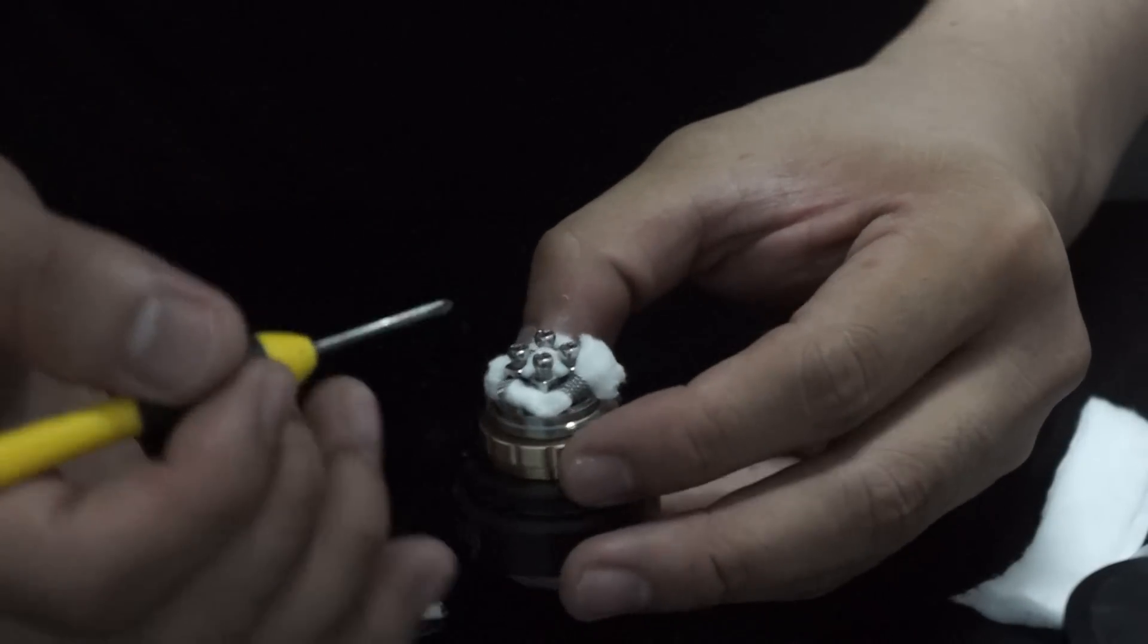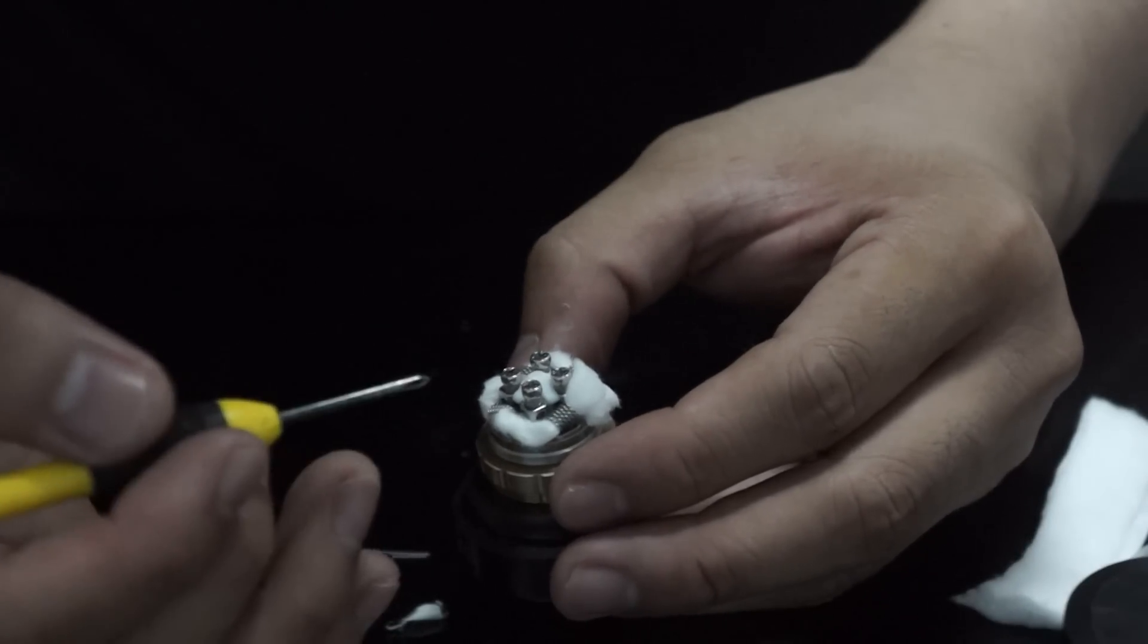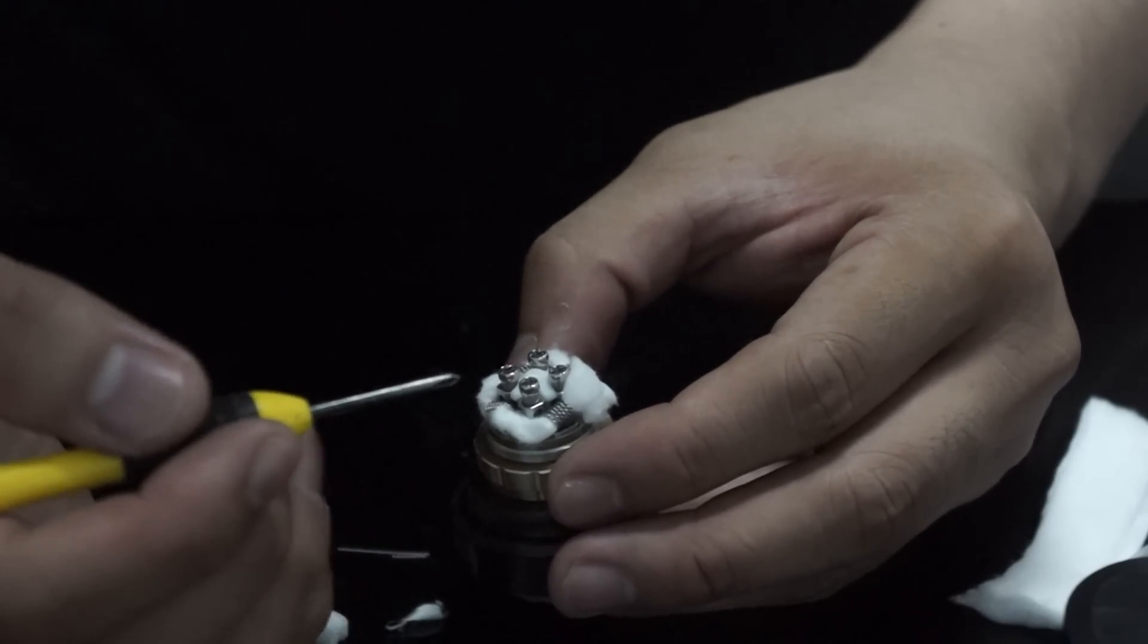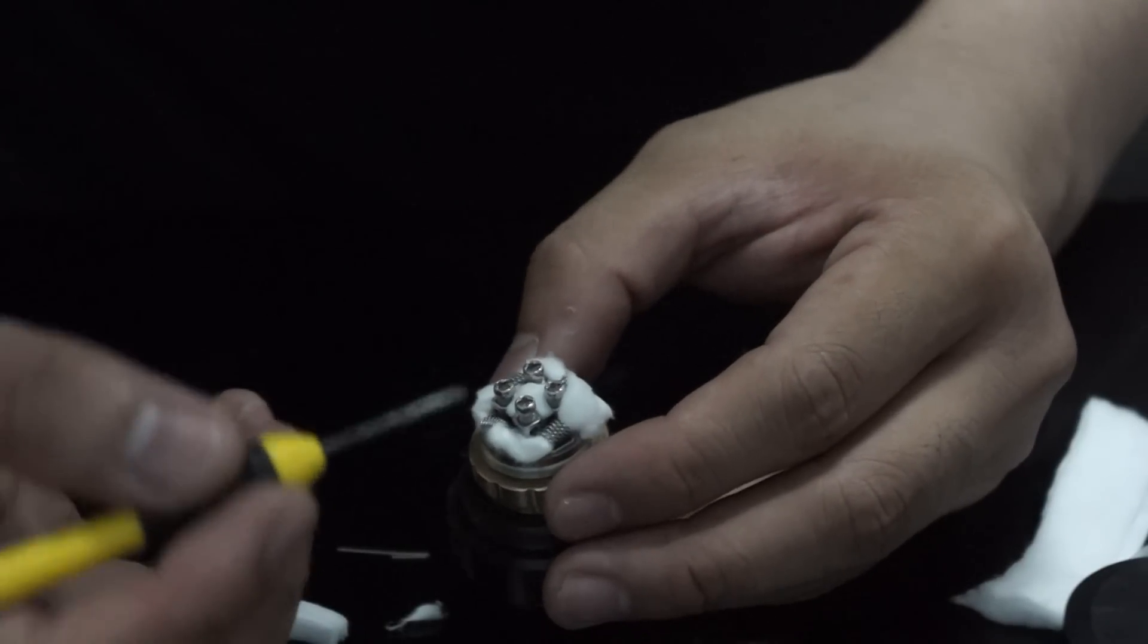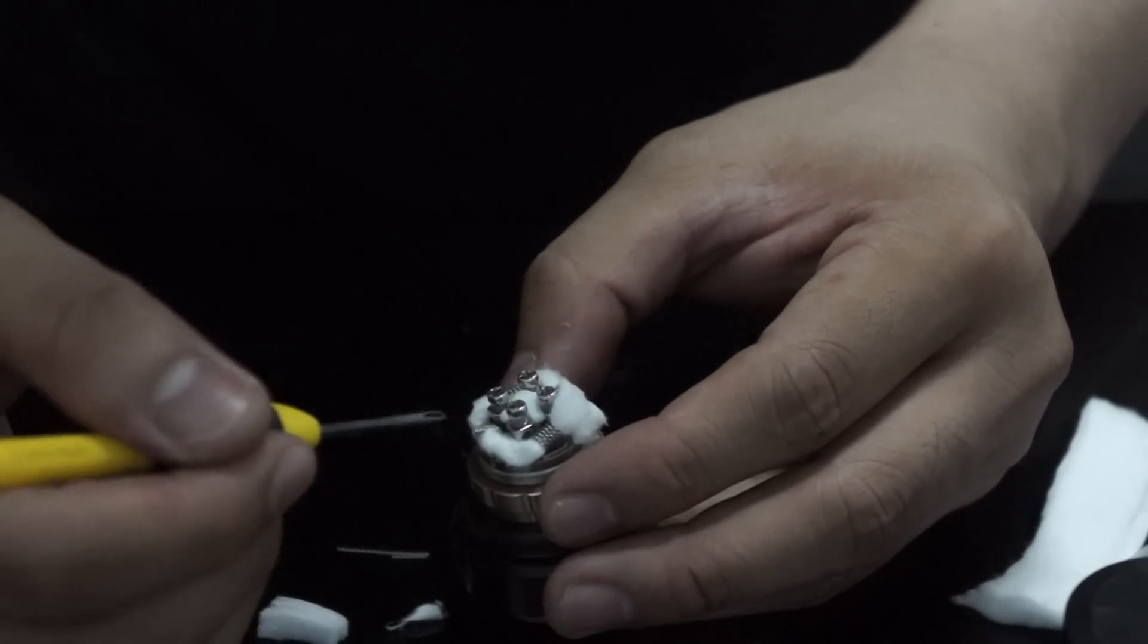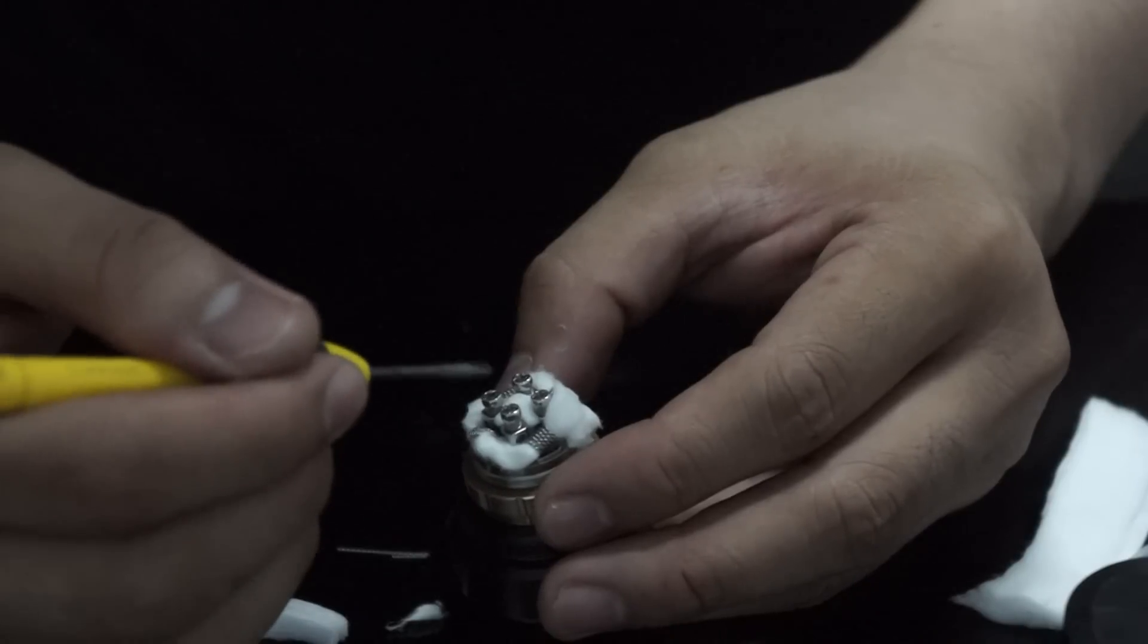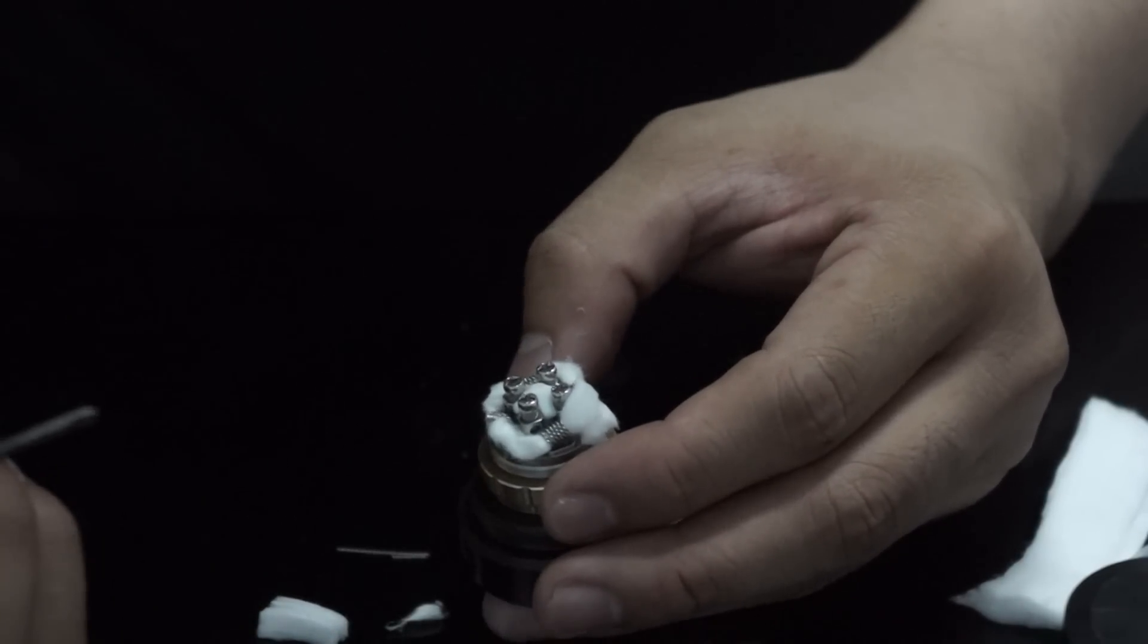The Teflon can definitely take the heat from the coil, but there's a possibility that you can burn it when your coil is in direct contact with the Teflon or with the juice guide. So just make sure that it doesn't touch the juice guide at all. And that's it.